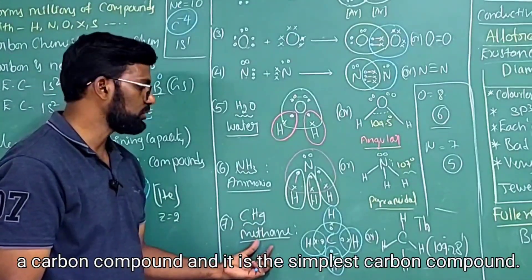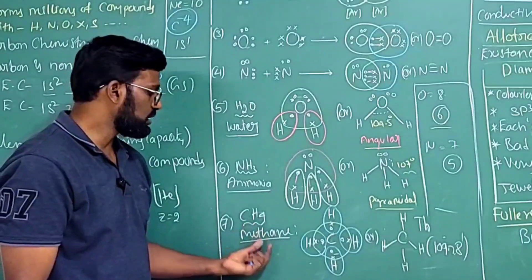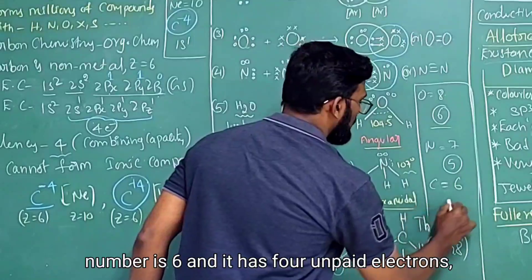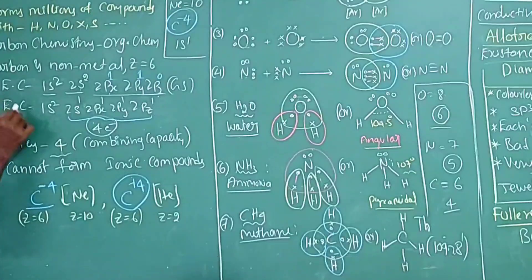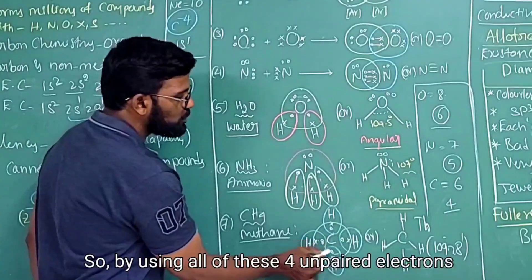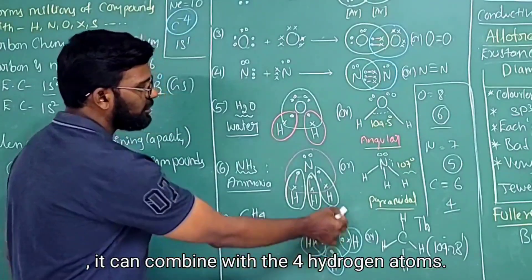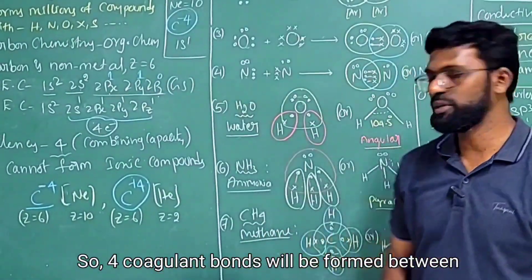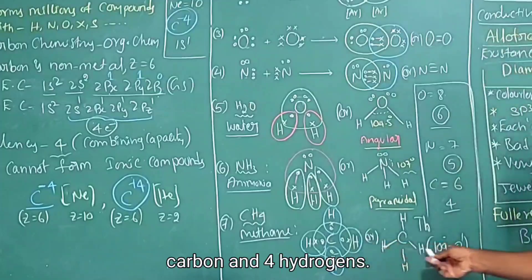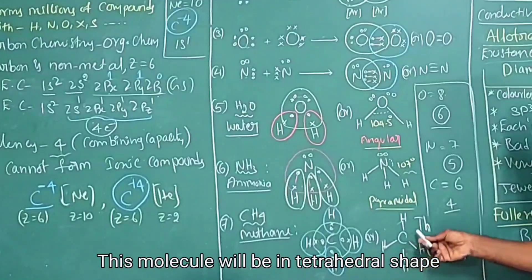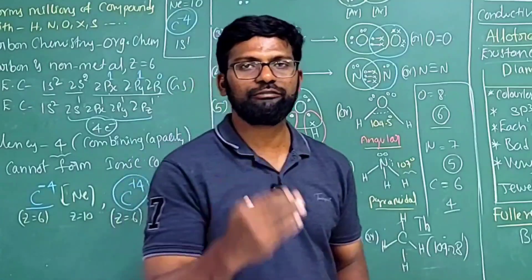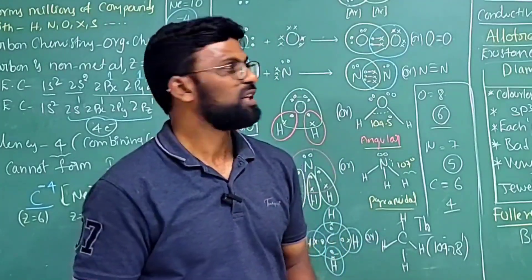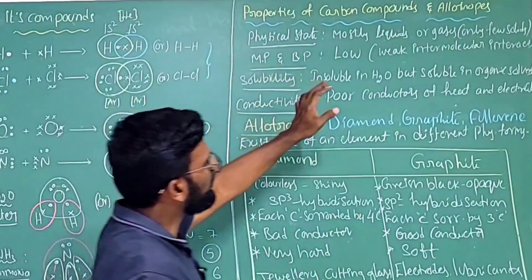For the methane molecule, CH₄ — the simplest carbon compound — the central atom is carbon, which in its excited state has four unpaired electrons. Using all four unpaired electrons, carbon combines with four hydrogen atoms, forming four covalent bonds. The CH₄ molecule has a tetrahedral shape with a bond angle of 109 degrees 28 minutes. This gives a brief idea of how covalent bonds are formed.